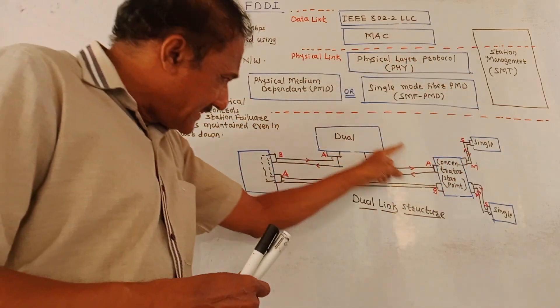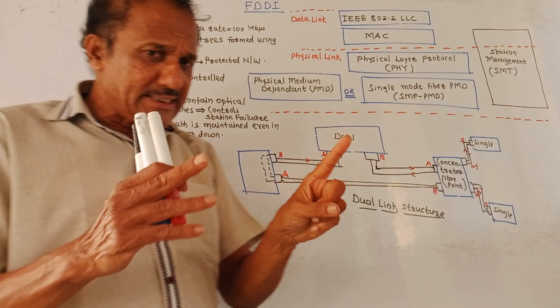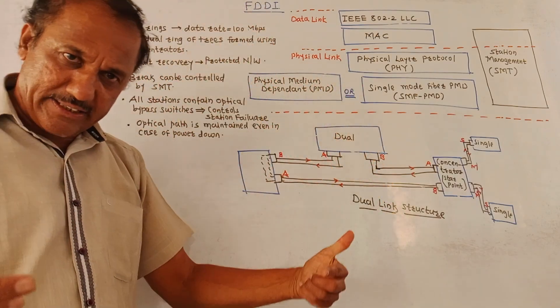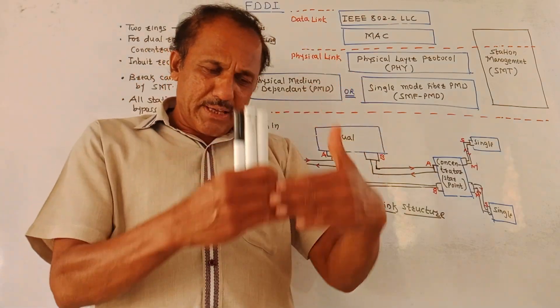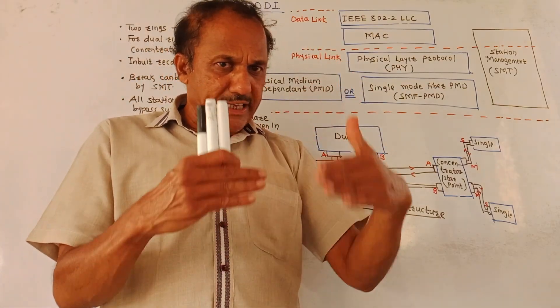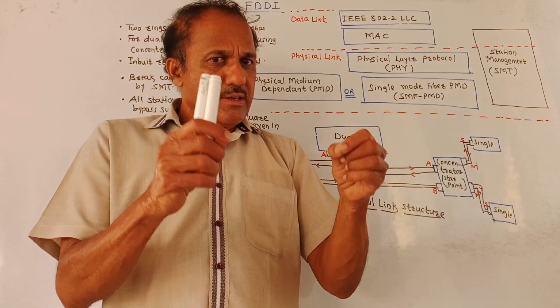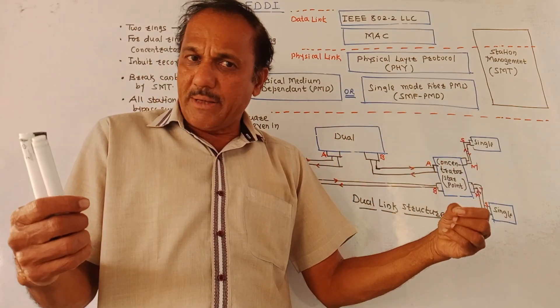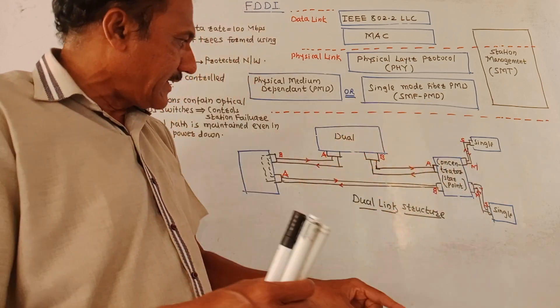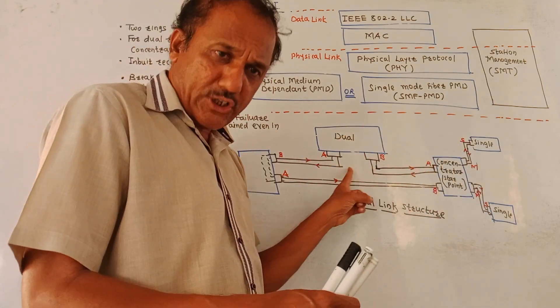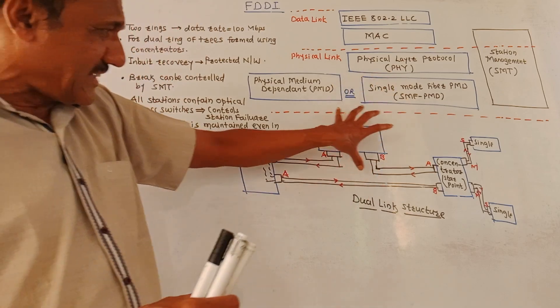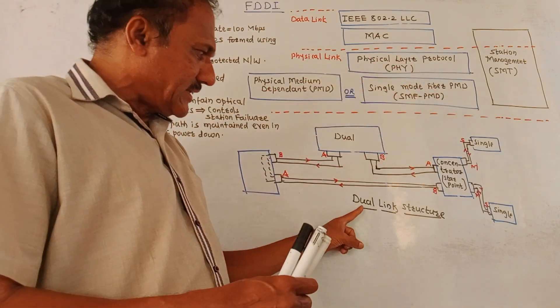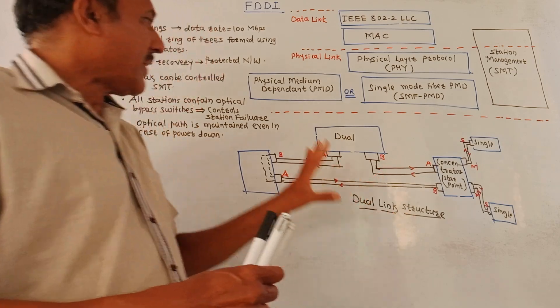Now, this is the dual link structure. As I said, two links are used. One is primary link and another is secondary link. Basically the data transmission takes place through the primary link. But if there is a failure or there are certain problems in the primary link, then secondary link is used. So, everywhere two links are shown. This is just one example to explain this concept. This is the structure of data link.